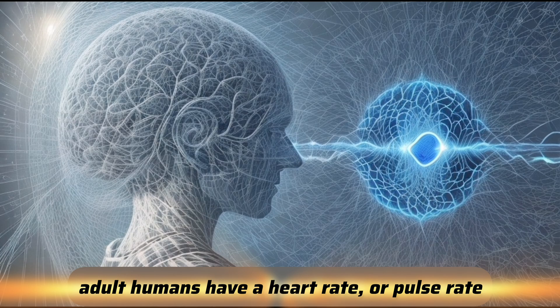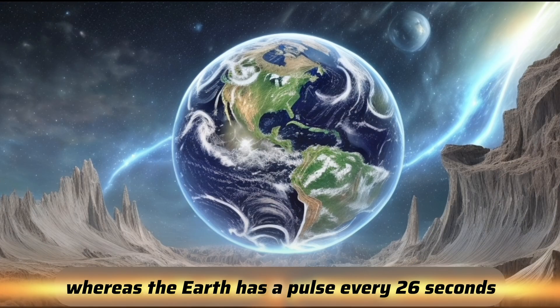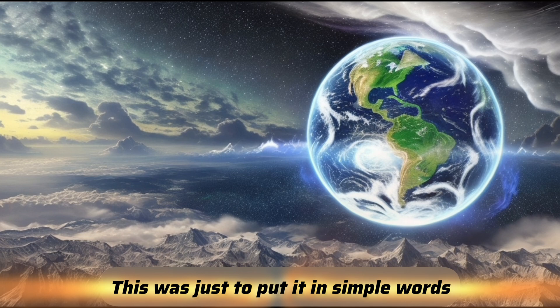To simplify it, adult humans have a heart rate or pulse rate between 60 to 100 per minute, whereas the Earth has a pulse every 26 seconds, roughly pulsating at 2.3 times per minute. This was just to put it in simple words.